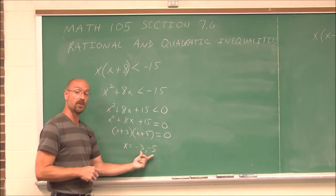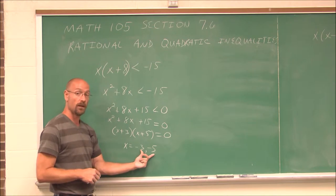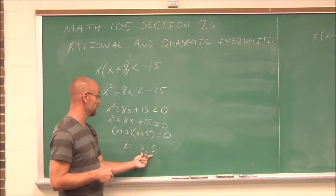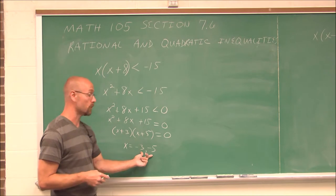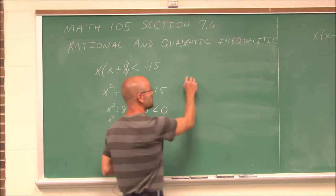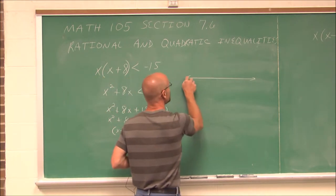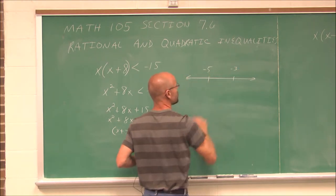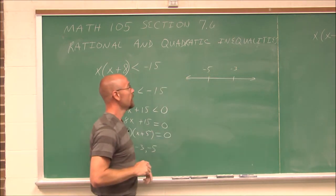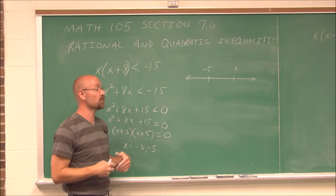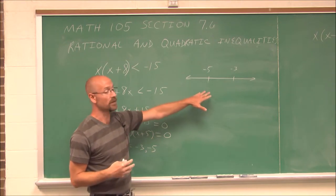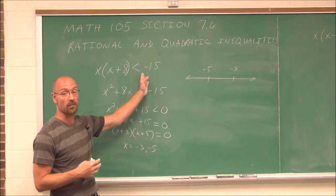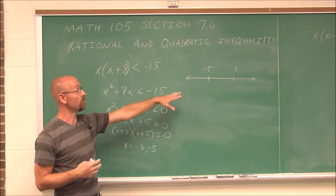What we're going to do is use these as a tool to find the intervals that make the original inequality true. So what we do with these values is put them on a number line — I have negative 5 and negative 3. And I can now choose test points to find whether something makes a true or false statement.